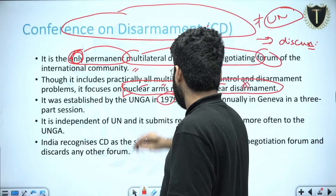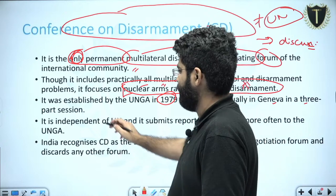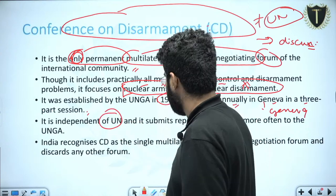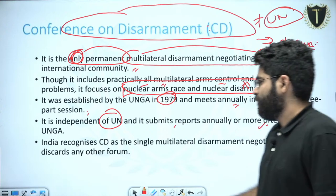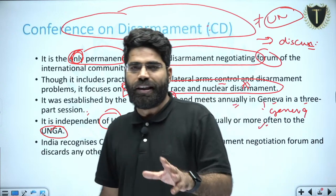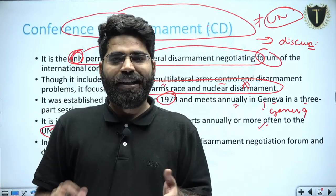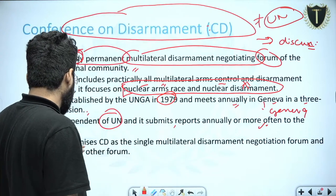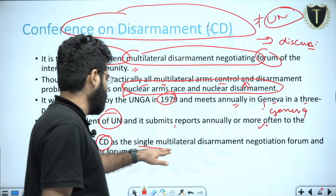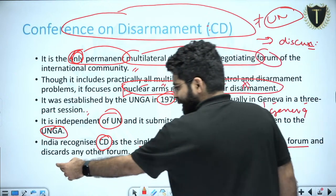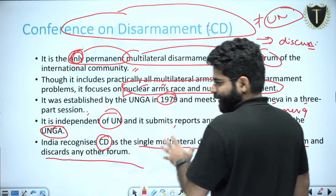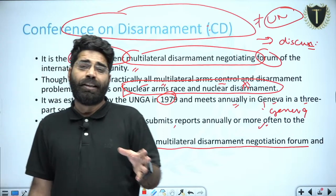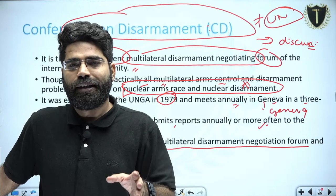It was established in 1979 and meets annually in Geneva in a three-part session. It is independent of the United Nations, but still submits reports annually to the UN General Assembly. India recognizes the Conference on Disarmament as the single multilateral disarmament negotiating forum and discards any other forum — for example, India does not recognize NSG or NPT.